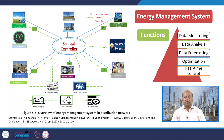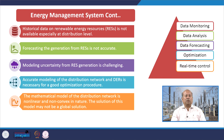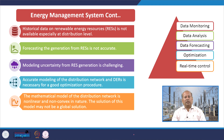Moving to energy management systems, which are responsible for data monitoring, data analysis, data forecasting, optimization and real-time control. You can see the control center and different components giving an overview of the energy management system in a distribution network. Challenges include: historical data on renewable energy resources not being available especially at distribution level, forecasting of generation from RES not being accurate, and modeling uncertainty from RES generation also being challenging. Accurate modeling of distribution network and DERs is necessary for a good optimization procedure.